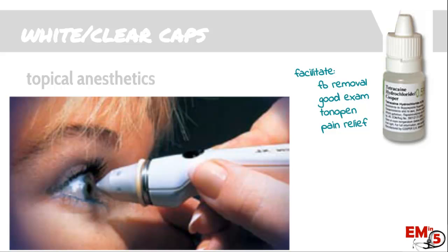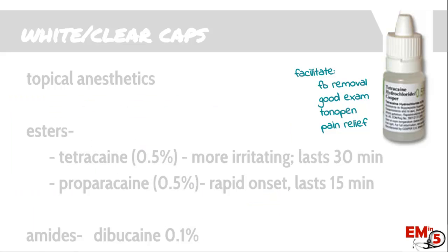The first one we'll talk about is the white or clear caps. These are the topical anesthetics, and we use these all the time in the ER. This helps us do a good exam for a patient that has a lot of eye pain. We use it for doing the tonopen exam to get intraocular pressure. It's good for pain relief while they're in the ER, and we can also use it for foreign body removal. This is not something we prescribe though — it's just for use in the ER.